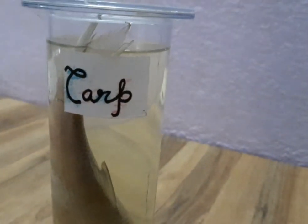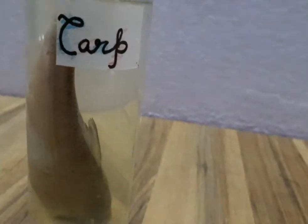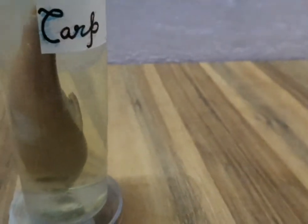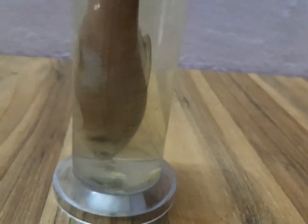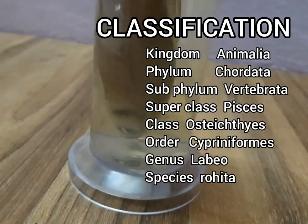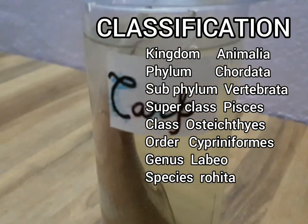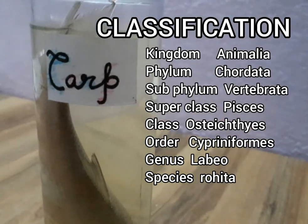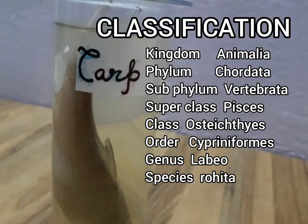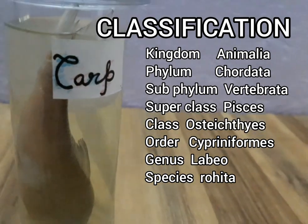The last organism for today's video is Labeo rohita, commonly called Rohu. In Bengali we call it Rui — a very common household fish eaten by Bengalis. The classification of this organism: Kingdom Animalia, Phylum Chordata, Subphylum Vertebrata, Superclass Pisces, Class Osteichthyes — indicating a bony endoskeleton — Order Cypriniformes, Genus Labeo, Species rohita.